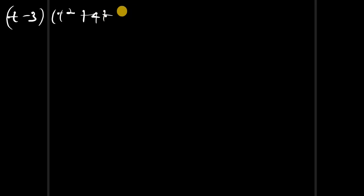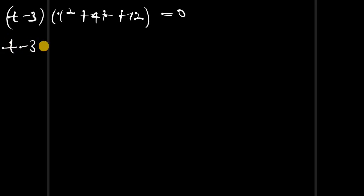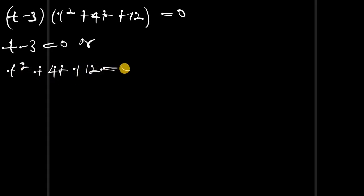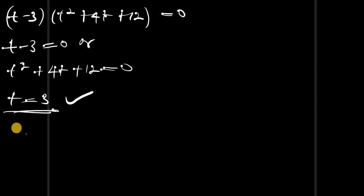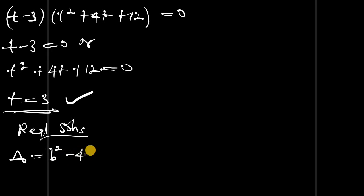So: (t minus 3)(t power 2 plus 4t plus 12) equals zero. This means t minus 3 equals zero, or t power 2 plus 4t plus 12 equals zero. From the first factor, t equals 3 — this has already been established as one solution. Now we need to check if the second equation gives us a real solution using the discriminant.